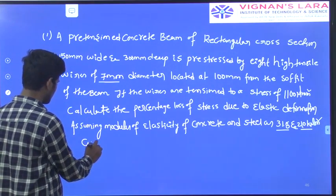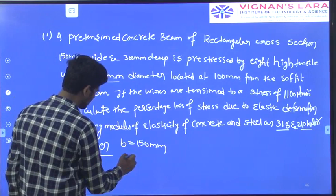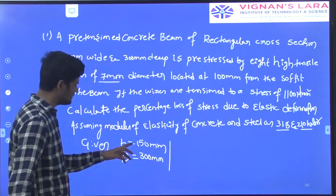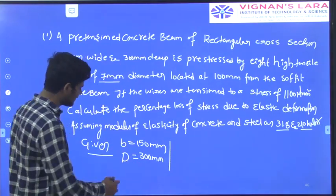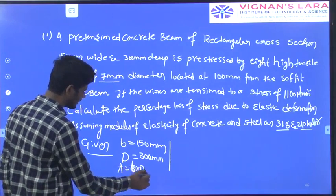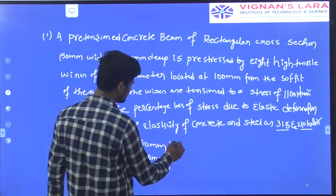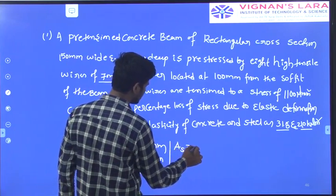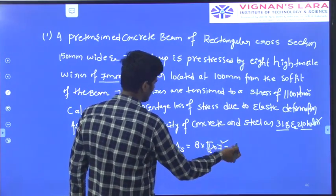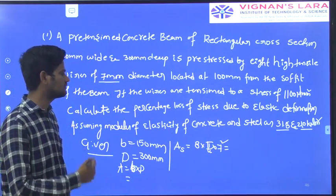Writing down the given data: width of the beam B = 150 mm; total depth of the beam D = 300 mm. The area of the concrete beam equals B × D. The beam is pre-stressed by 8 high-tensioned wires of 7 mm diameter, so the area of steel equals 8 × (π/4) × 7² = 307.9 mm². The modulus of elasticity of concrete EC = 31.5 kN/mm² and modulus of elasticity of steel ES = 210 kN/mm².